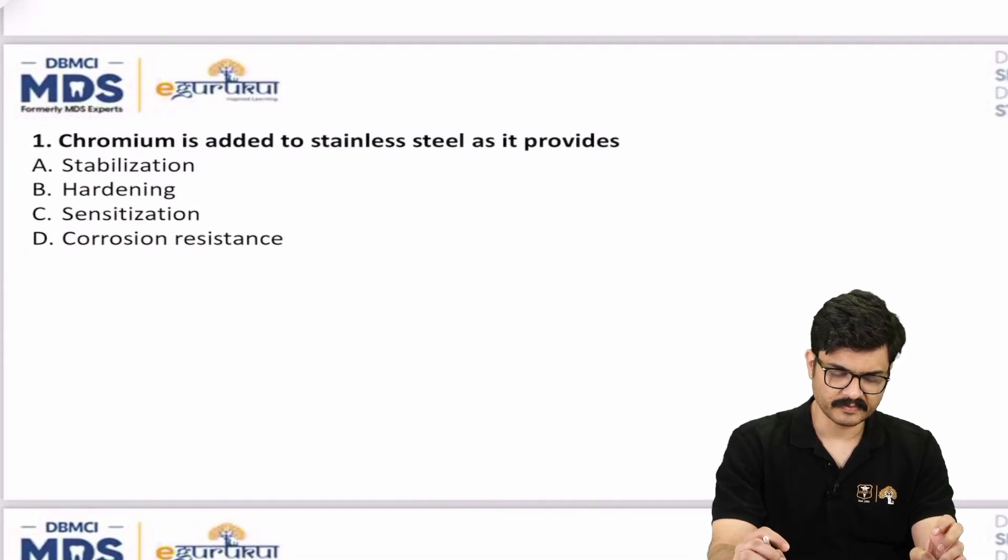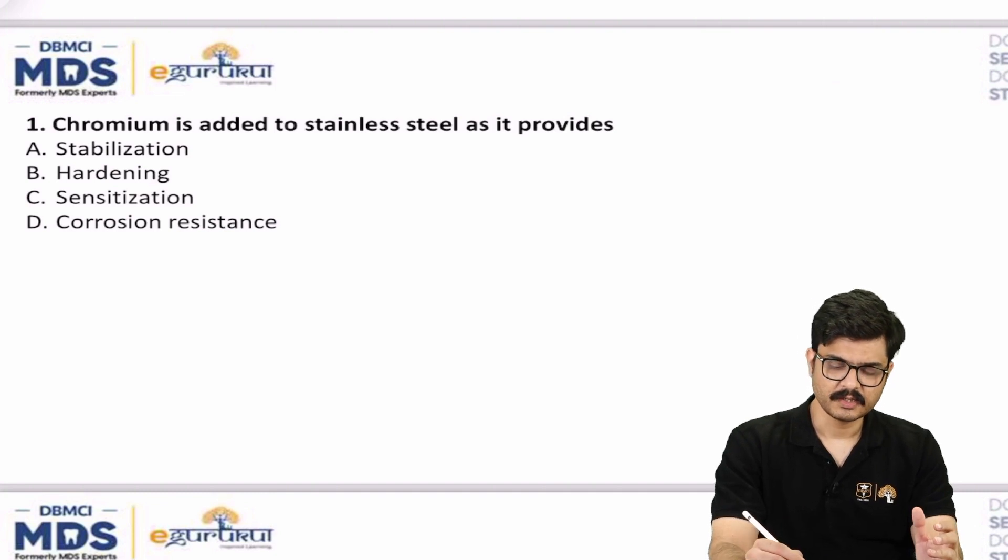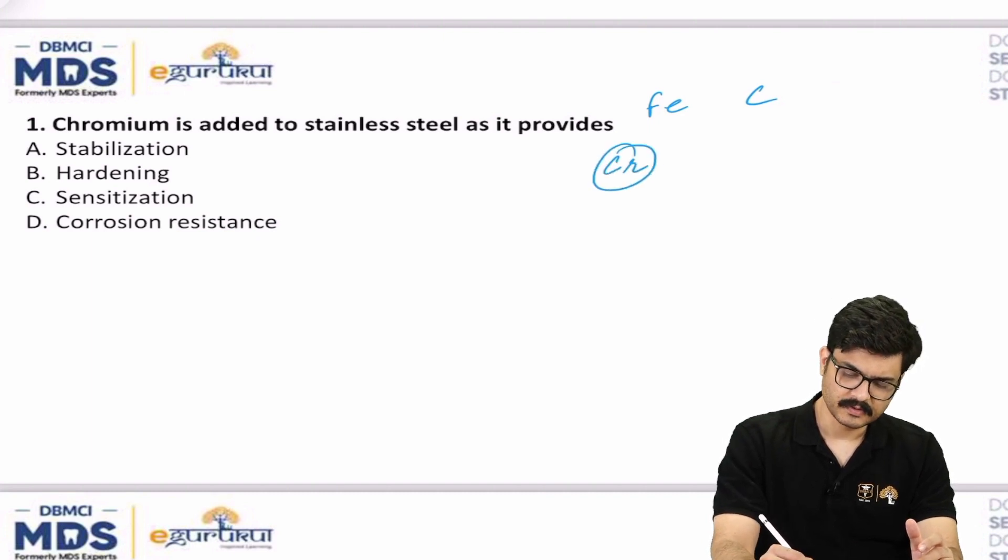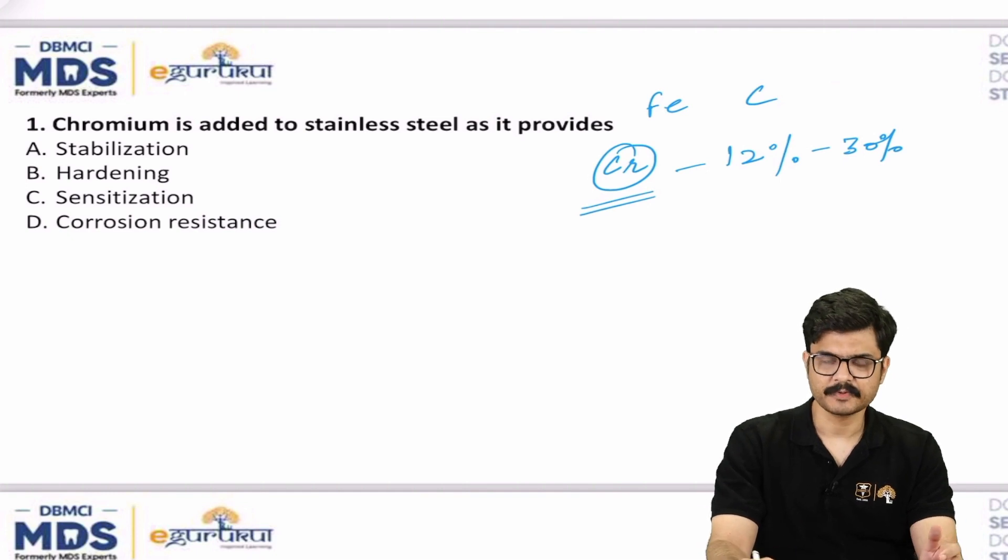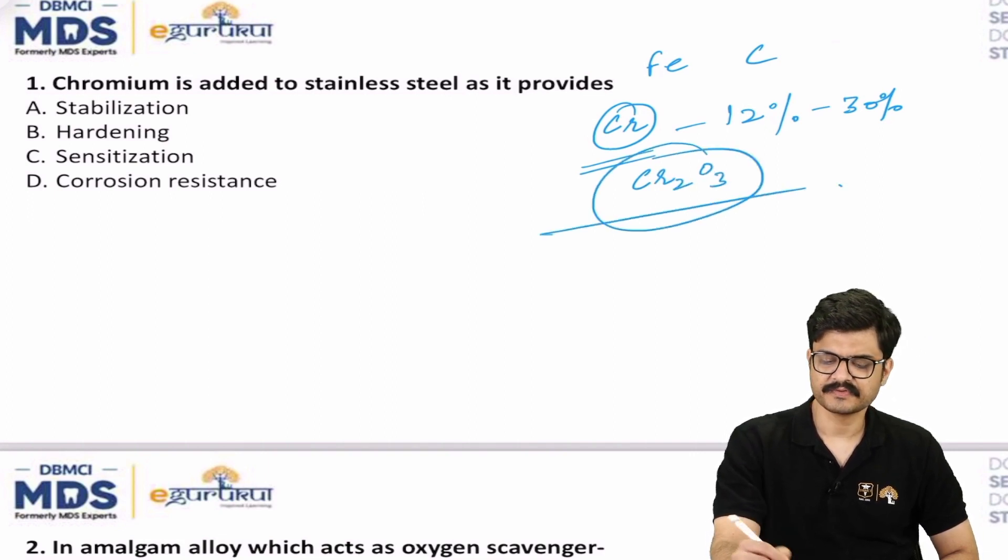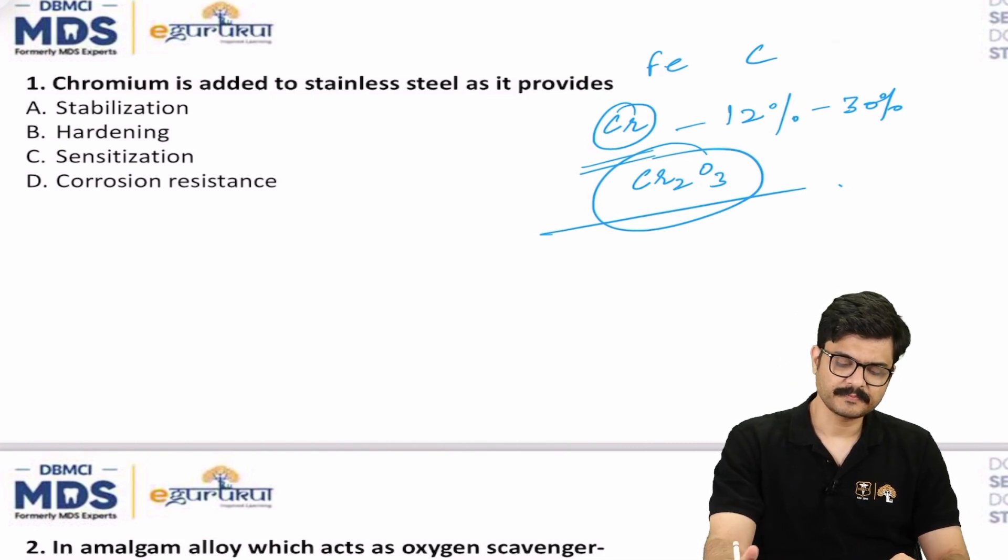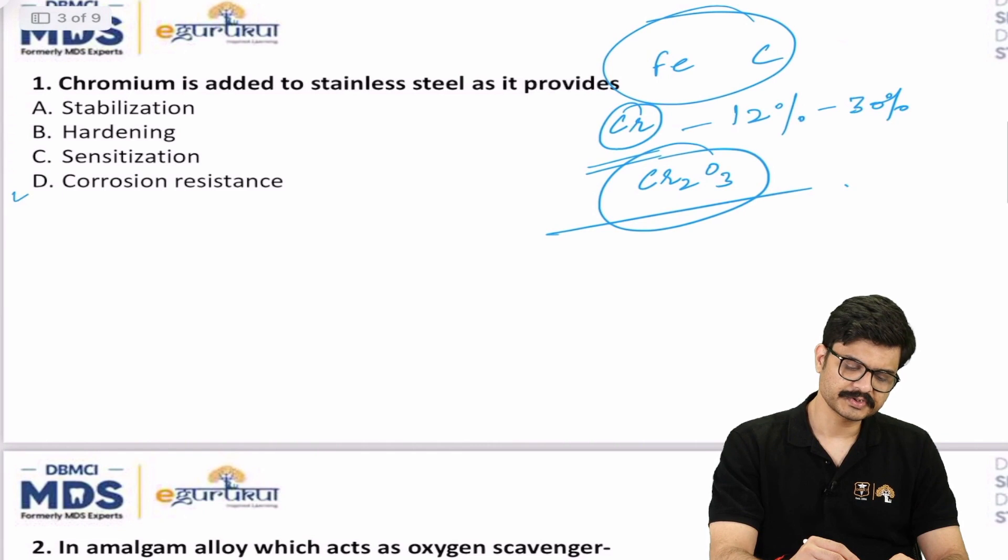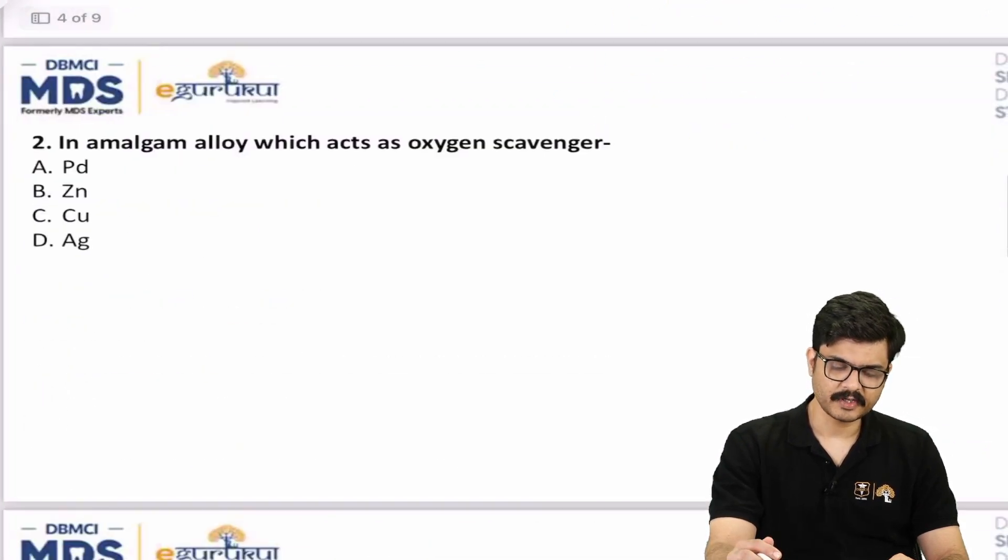We'll quickly go through the questions. First question: Chromium is added to stainless steel as it provides what? In stainless steel, whenever we talk of steel we're talking of iron with some amount of carbon. As far as chromium is concerned, it is added anywhere between 12 percent to 30 percent. What does it provide? It provides a passivating layer of chromium oxide. Valency of chromium is three, so chromium twice, oxygen thrice. This basically provides a passivating layer on the surface of the steel which prevents oxidation, in other words, corrosion of other important components like iron. So basically the idea is that it provides corrosion resistance. D is the answer here.